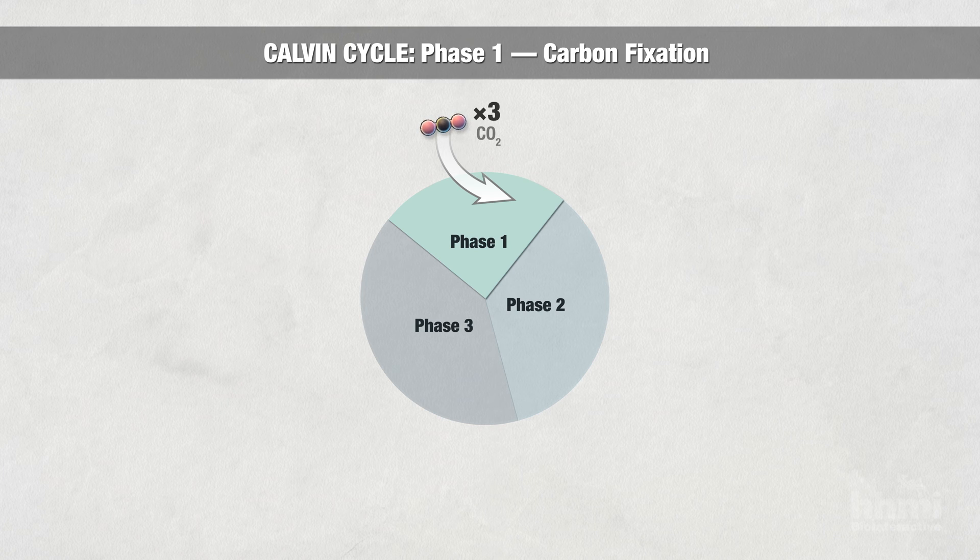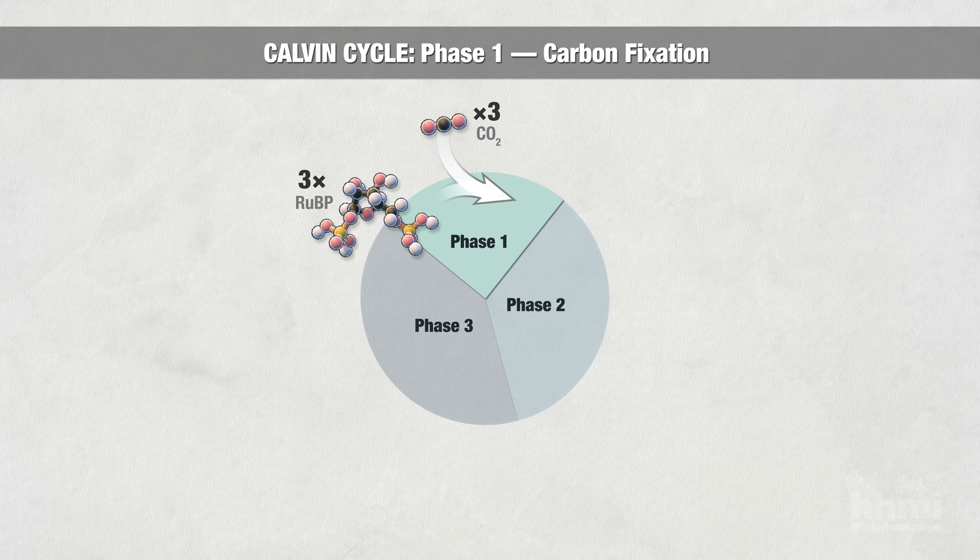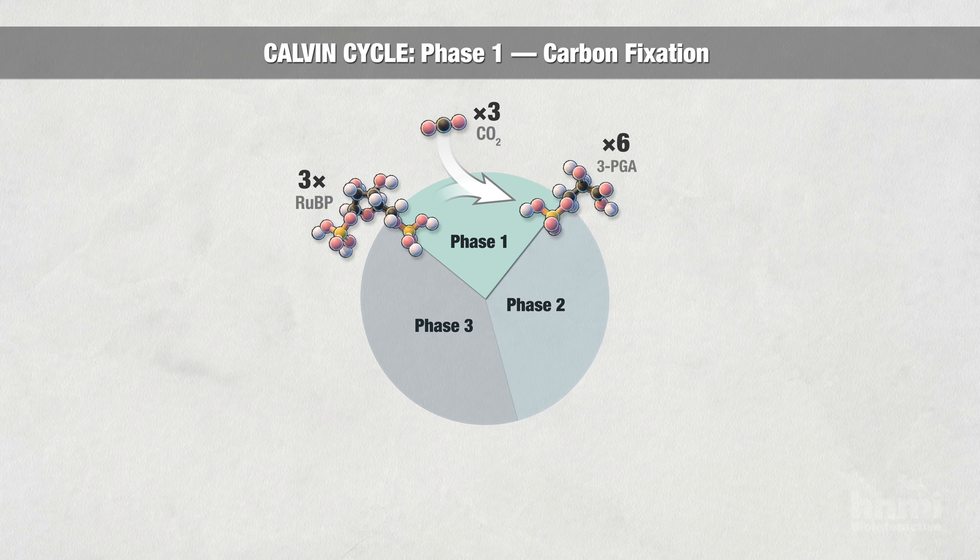Three molecules of carbon dioxide react with three molecules of ribulose bisphosphate, RUBP, to produce six molecules of a three-carbon molecule called 3PGA.